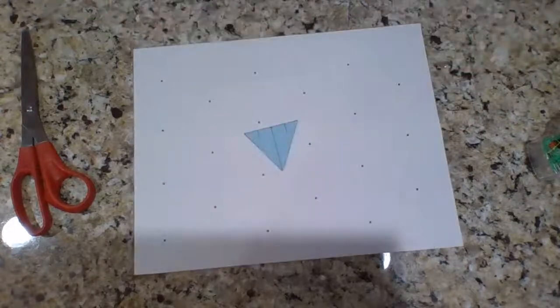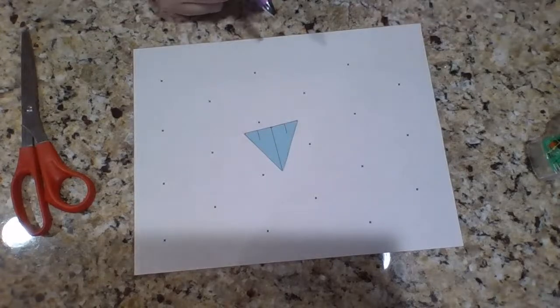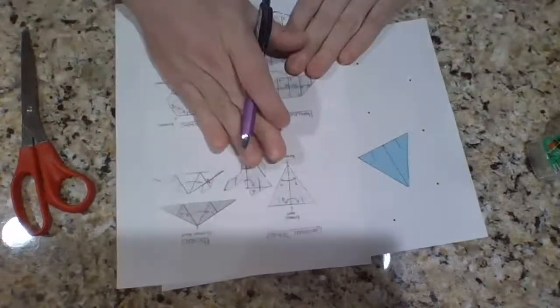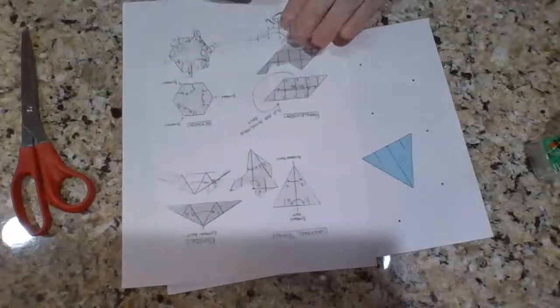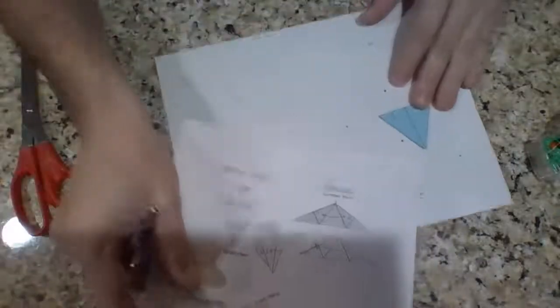When we work with the equilateral triangle, we are going to number it. On the handout that you have, one of the instructions shows what this is going to look like. You're going to see some numbers on here: the numbers one, two, three, and four.